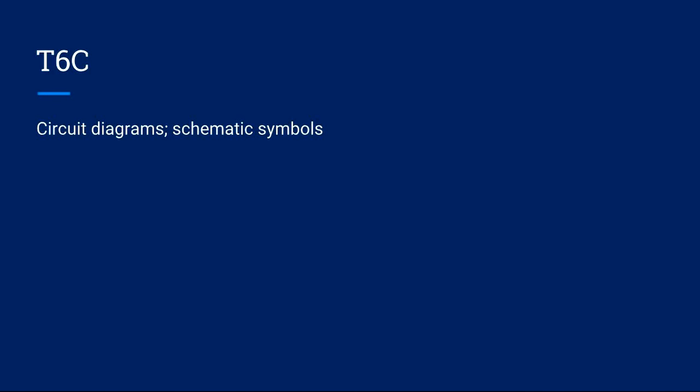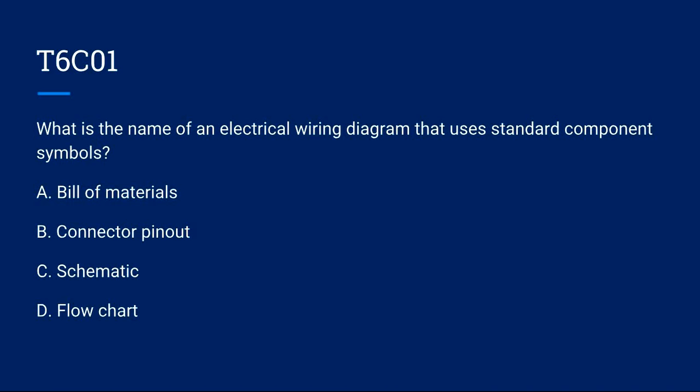T6C01: Circuit diagrams and schematic symbols. What is the name of an electrical wiring diagram that uses standard component symbols? A, bill of materials. B, connector pinout. C, schematic. Or D, flowchart? The correct answer is C, schematic.